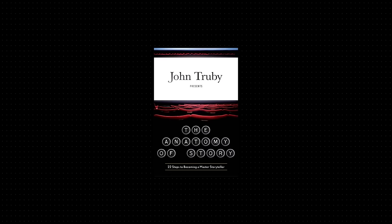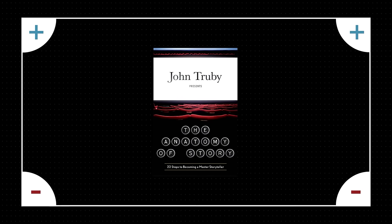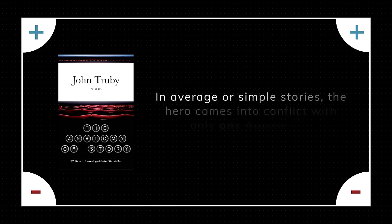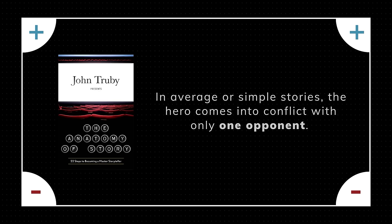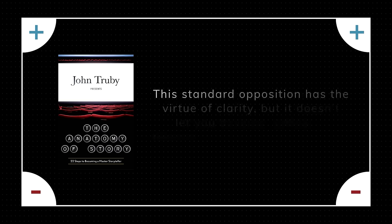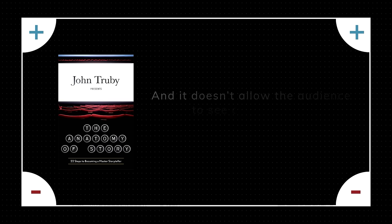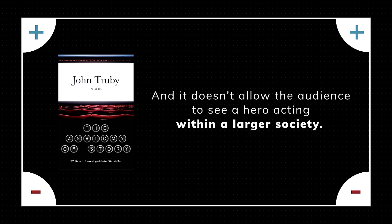In John Truby's The Anatomy of Story, he introduces a concept called four-corner opposition. Truby writes: in average or simple stories, the hero comes into conflict with only one opponent. This standard opposition has the virtue of clarity, but it doesn't let you develop a deep or powerful sequence of conflicts, and it doesn't allow the audience to see a hero acting within a larger society.